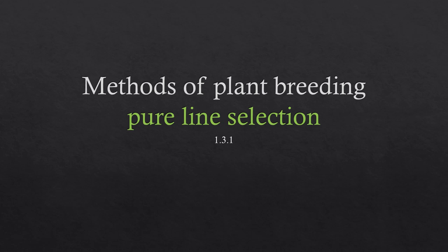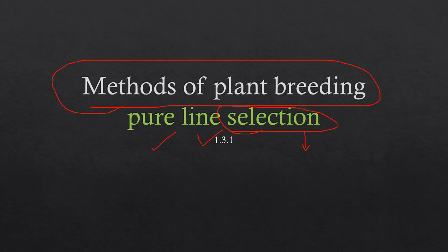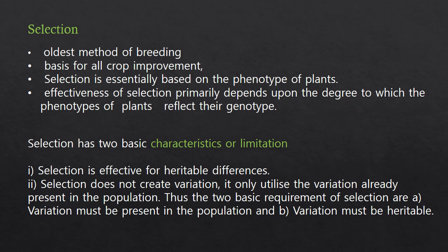Welcome to Leaves and Lungs. Today we're going to cover a topic on methods of plant breeding. There are a lot of methods of plant breeding, and one important method is selection. Selection is, just by the name itself, selecting plants based upon their phenotypes. The topic we're going to see today is pure line selection.